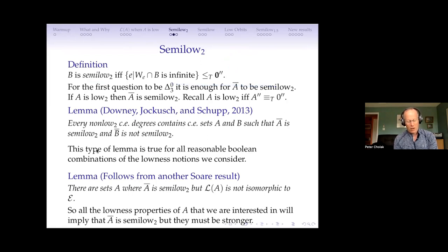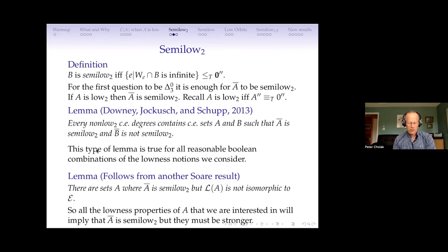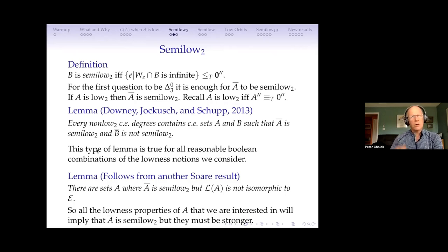That's all I needed for this first question. And if A is low 2 then it's also semi-low 2. Low 2 means your second jump is as low as it possibly can be.